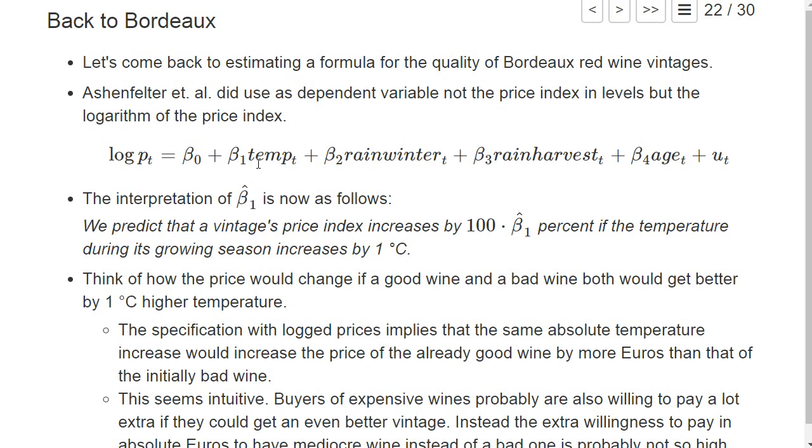So the question is, why do we take the logarithm? So there are different arguments for it. Some are basically thinking about the data generating process and think yourself, what is more plausible? So think if we would initially have either a good wine or a bad wine, and now think how would the price increase if it even gets better because of the temperature during the growing season goes up by one degree Celsius. If we have the price in logarithms, it implies that the absolute temperature increase would increase the good wine by the same percentage in the price of the bad wine. But it means in absolute euros, the good wine increases by even more euros. So if the good wine is worth a thousand euros and goes up by 10%, it increases by 100 euros. If the bad wine is worth only 100 euros and goes up by 10%, it only goes up by 10 euros.